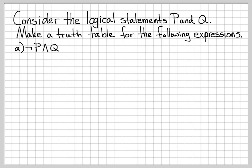We're working with the logical statements P and Q. The first thing we need to do is make a table that has P and Q as the columns, and list all the different combinations of P and Q. We start with FF, then FT, then TF, then TT. These are all the different ways that you can list the combinations of P and Q being true and false.